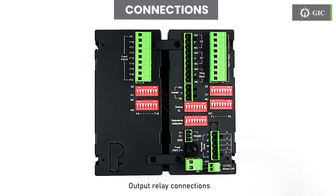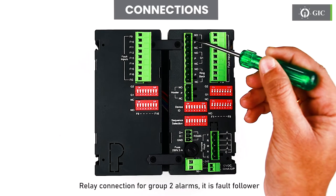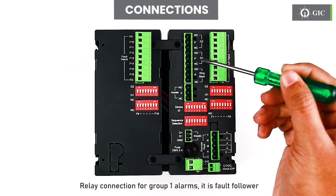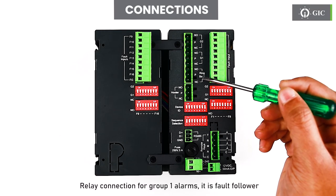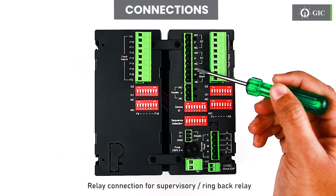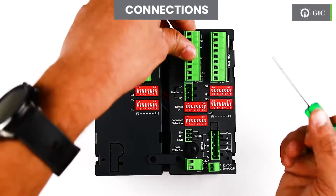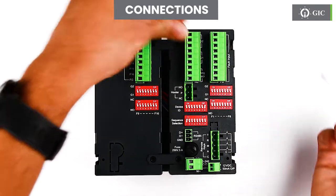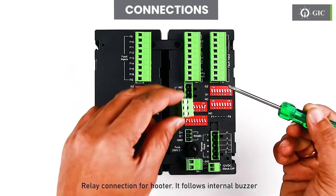Output relay connections. Relay connection for group 2 alarms — it is fault follower. Relay connection for group 1 alarms — it is fault follower. Relay connection for supervisory ring back relay. Relay connection for hooter — it follows internal buzzer.